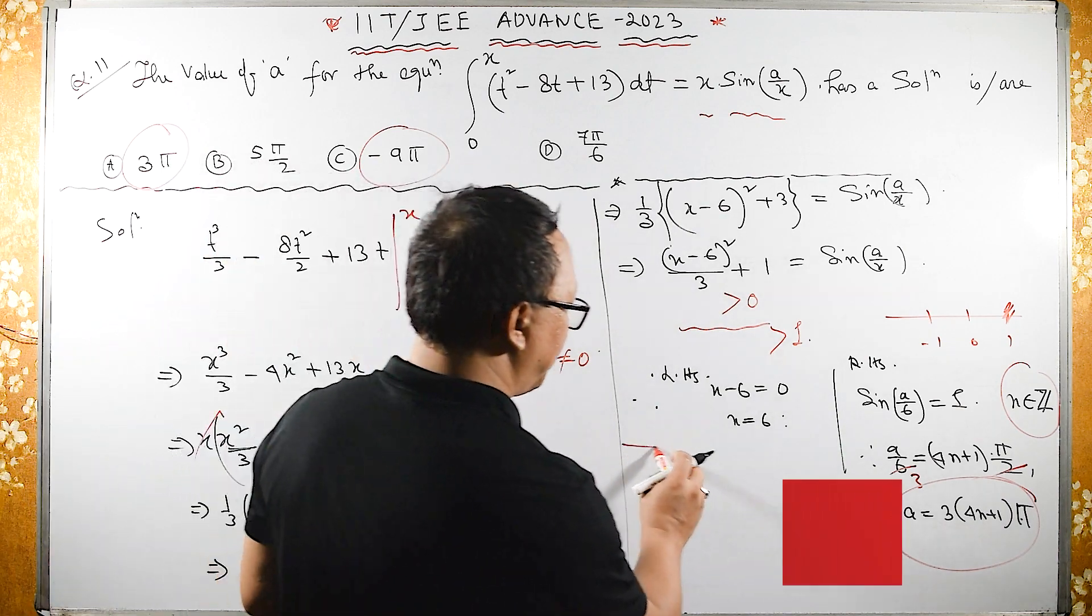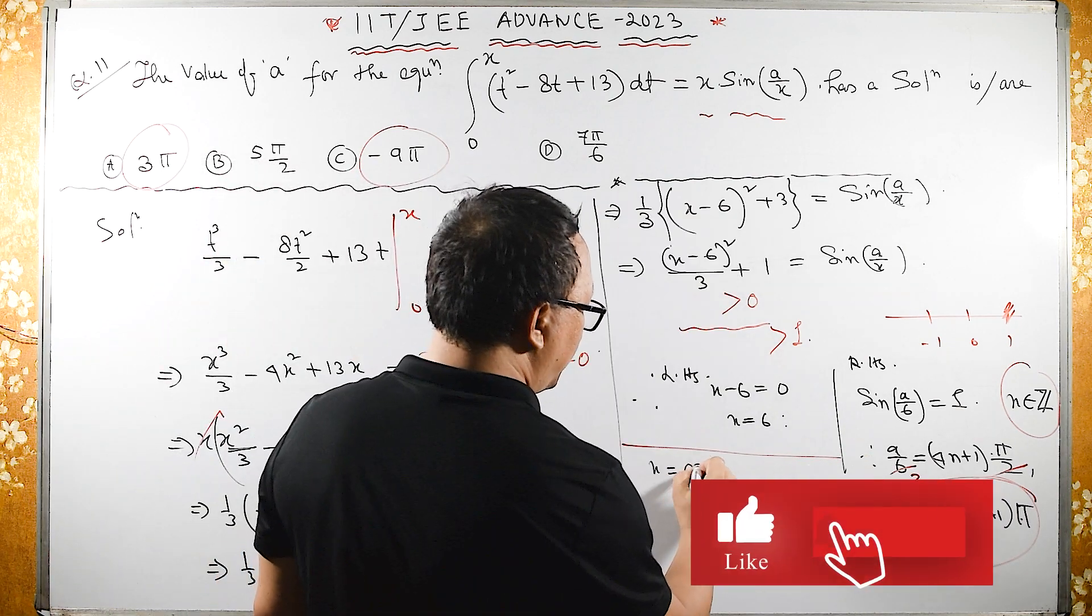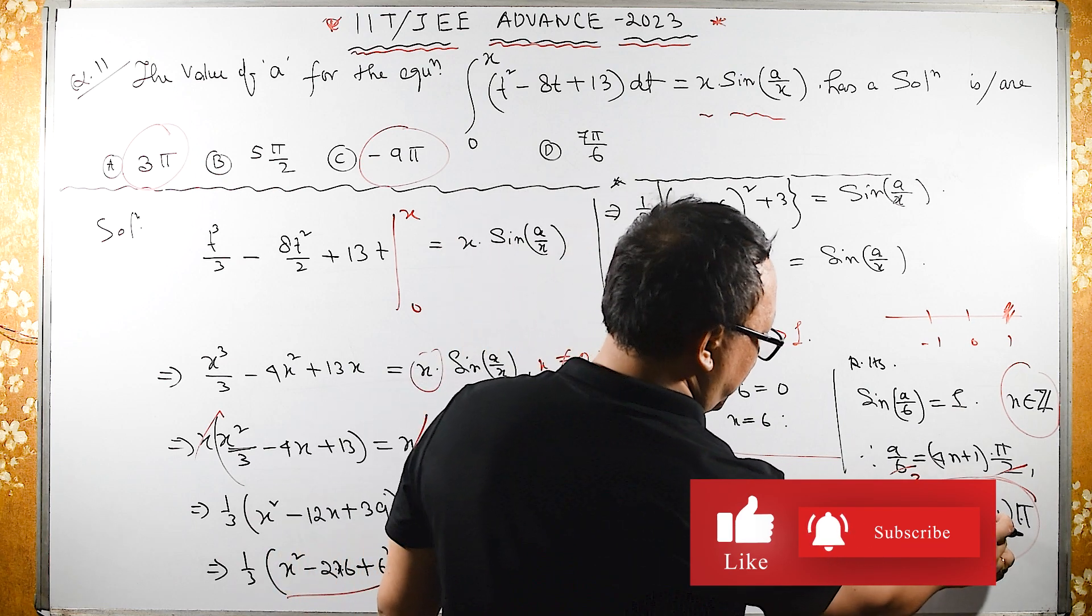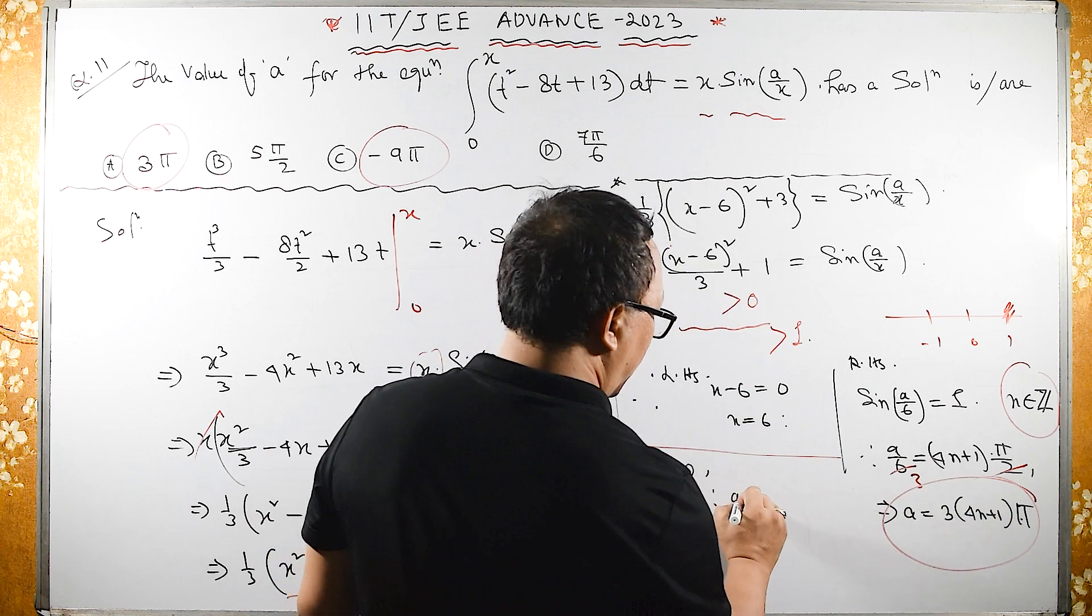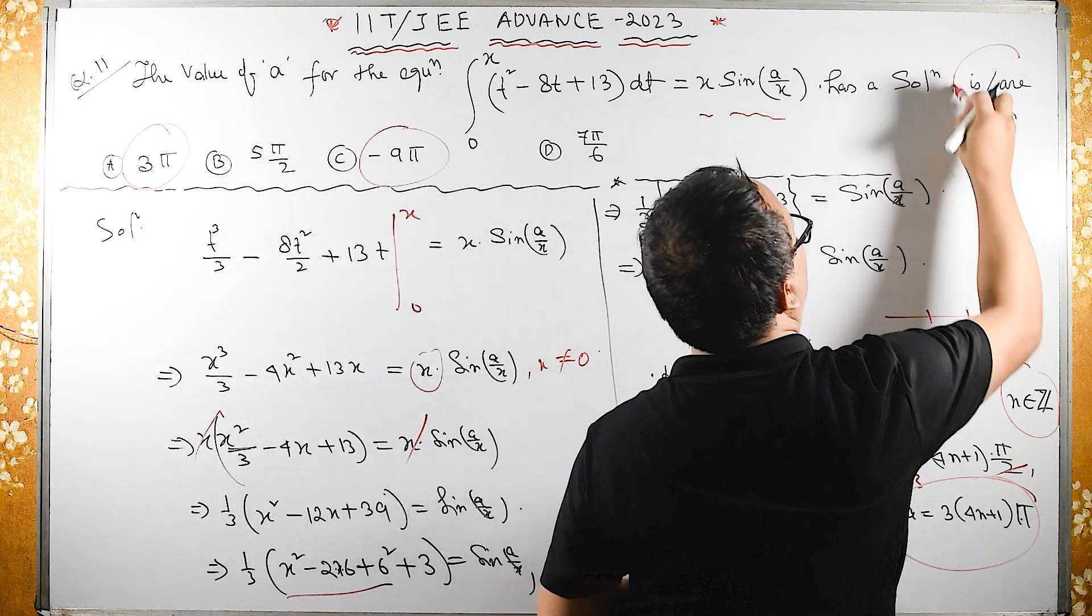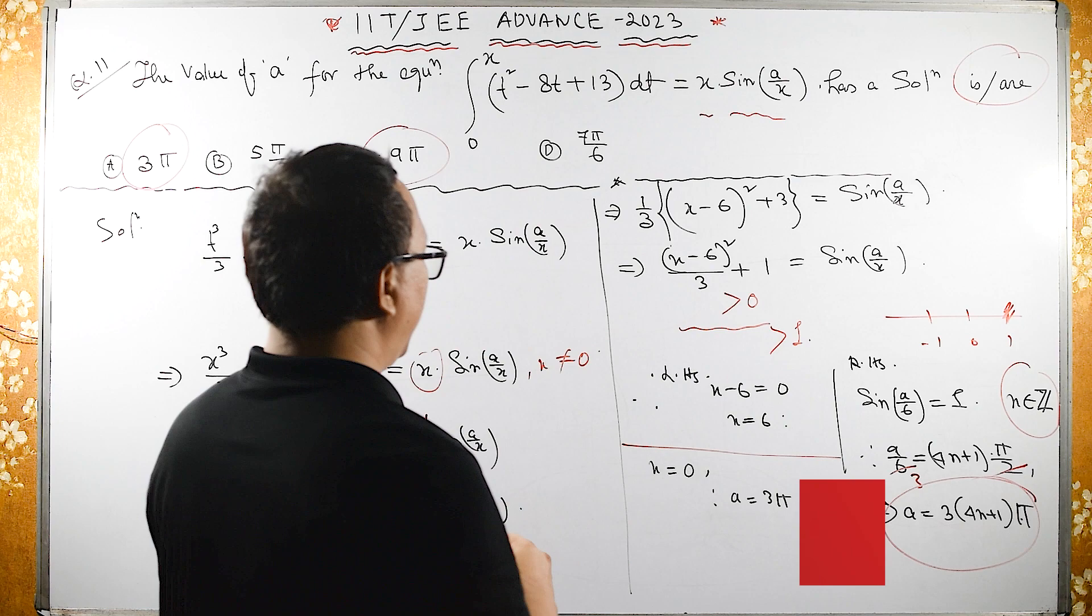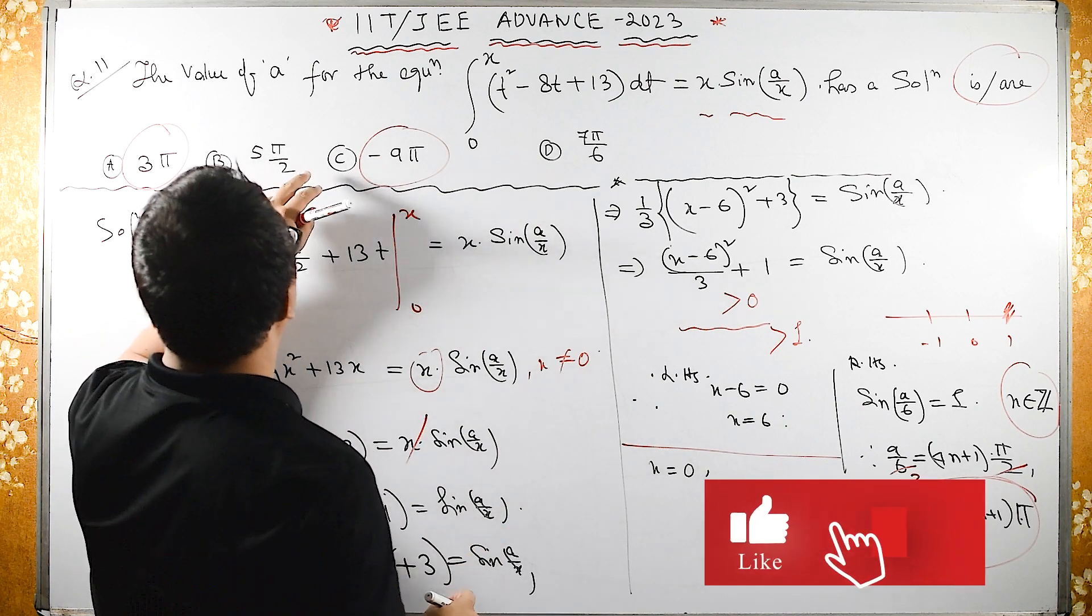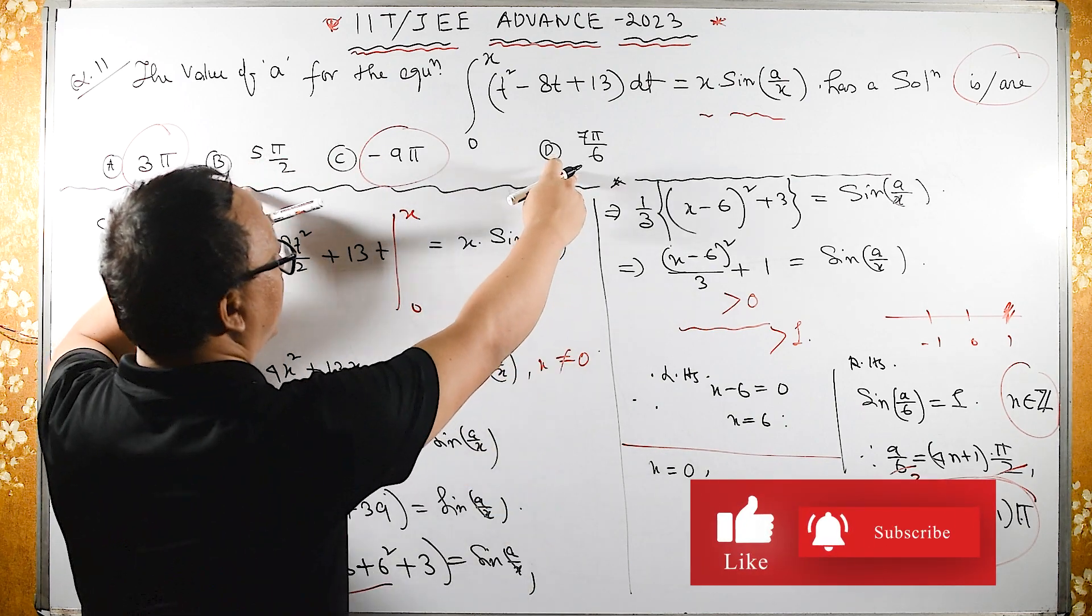When N equals 0, this becomes 0. Therefore A becomes 3π. So this is one possibility. They are asking is or are. These two are fractions.